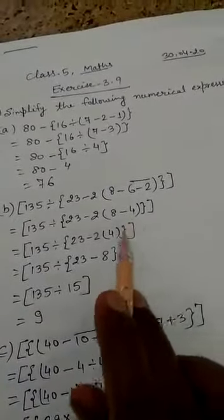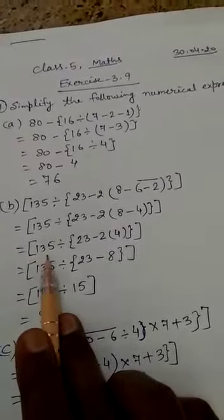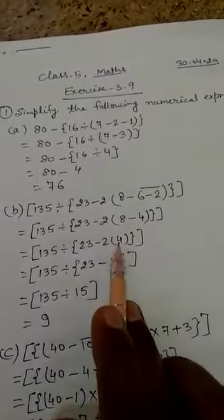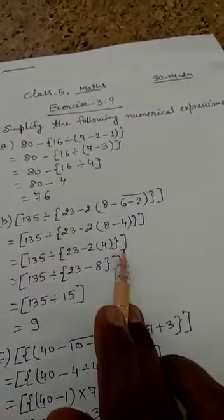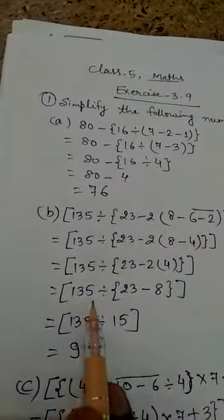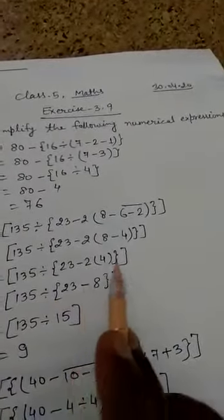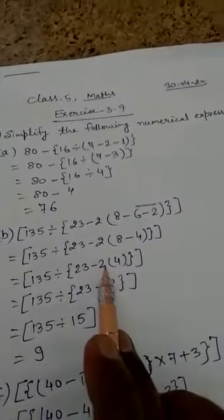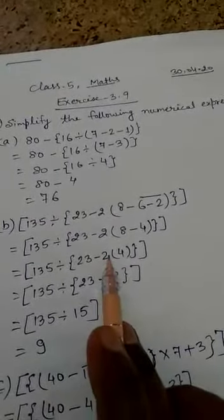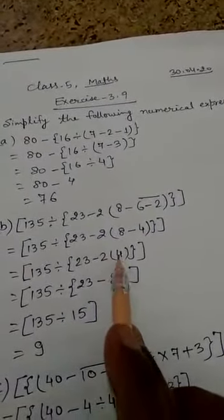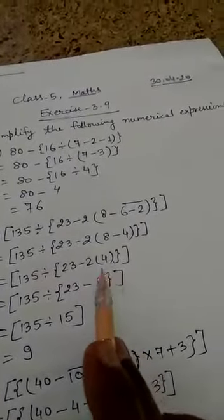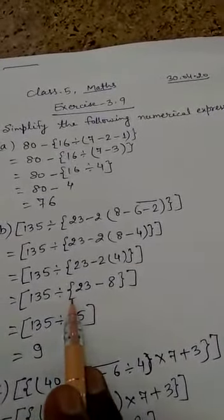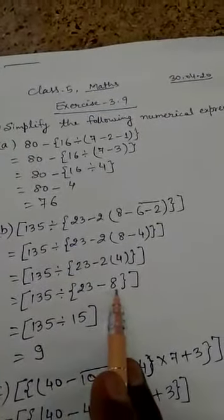Now we will solve the small brackets in the next step: big brackets, 135 divided by curly brackets, 23 minus 2, and small brackets gives 8 minus 4 equals 4. Note that there is no sign between 2 and the small brackets, which means multiplication. So 2 into 4 equals 8. Now removing the small brackets, we have: big brackets, 135 divided by curly brackets, 23 minus 8 equals 15. Curly brackets are removed.